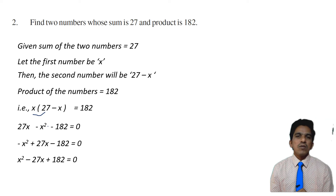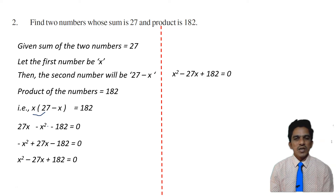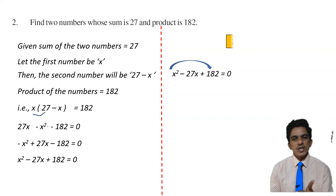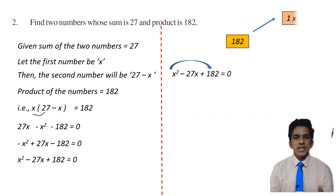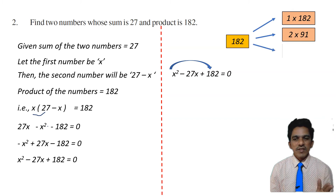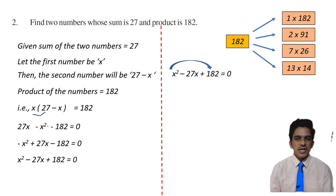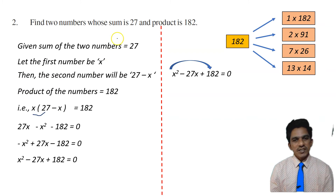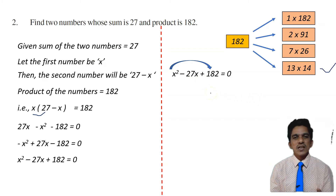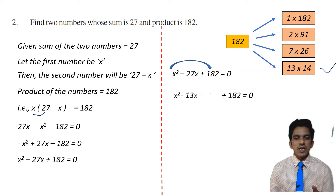The quadratic equation in standard form is x squared minus 27x plus 182 equals 0. The coefficient of x squared is 1 and the constant is 182, so 1 into 182 is 182. We factorize 182: 1×182, 2×91, 7×26, 13×14. Since the constant has a positive sign, we add the factors to get the middle term 27. So we consider 13 and 14, whose sum is 27. Writing the sign of the middle term to both factors: x squared minus 13x minus 14x plus 182 equals 0.